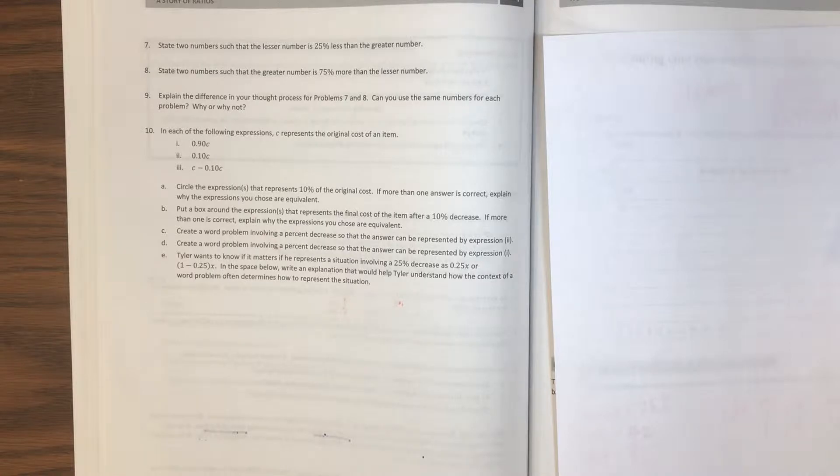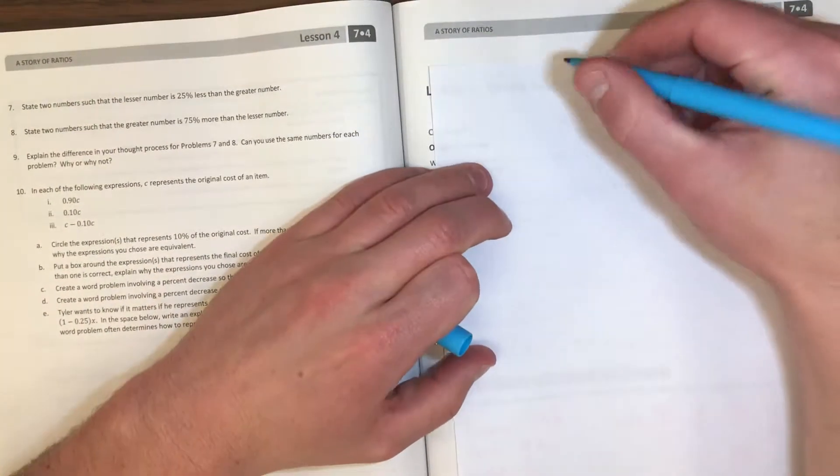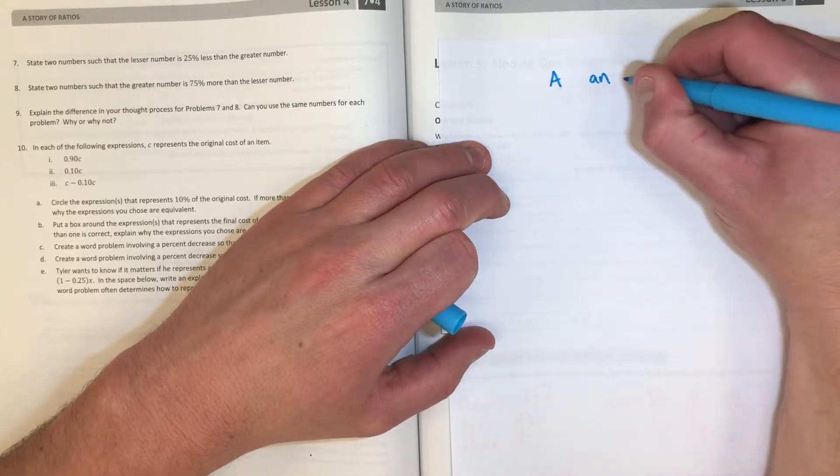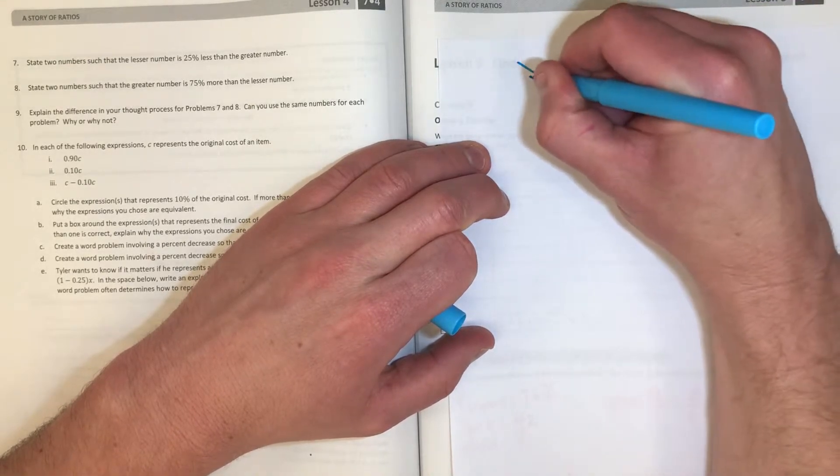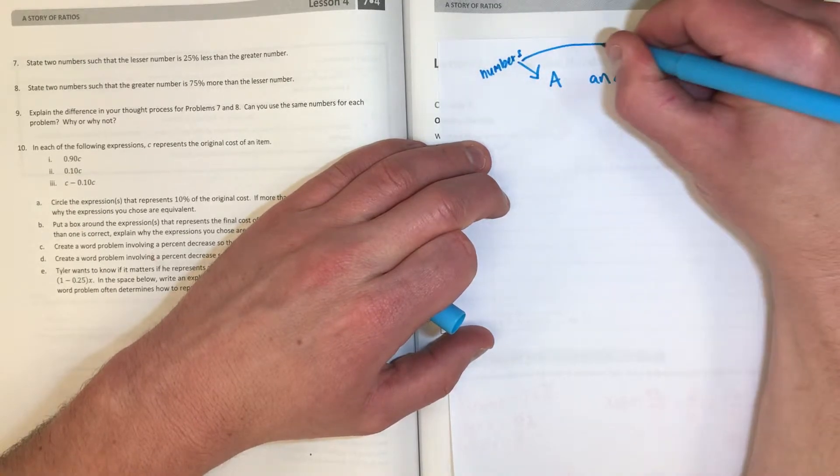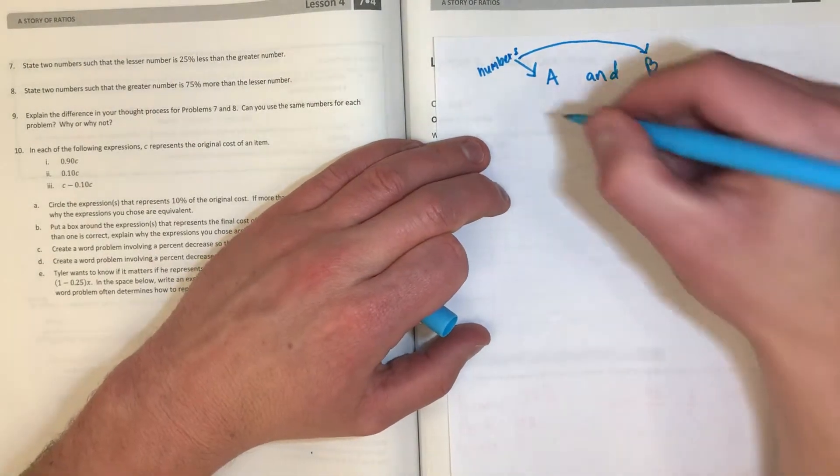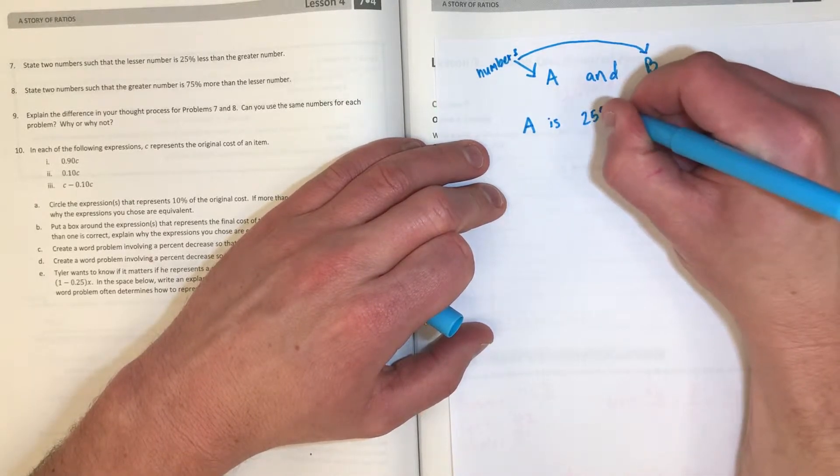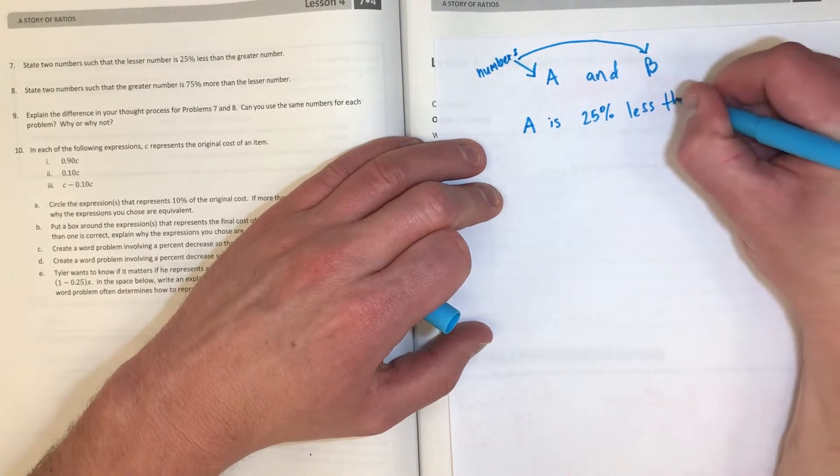I'm going to start over here on Question 7 in Lesson 4. It says: State two numbers such that the lesser number is 25% less than the greater number. So really, if a number is 25% less, let's say you have two numbers A and B - these are numbers, right now they're letters but they're really numbers.